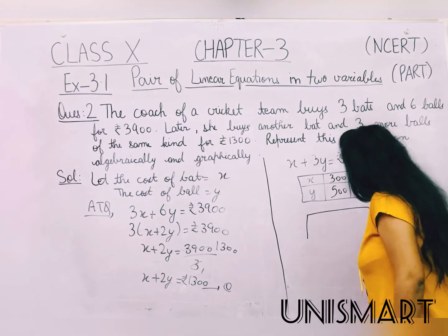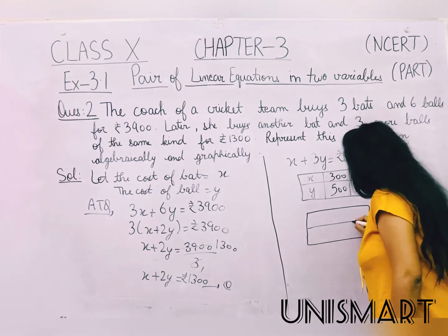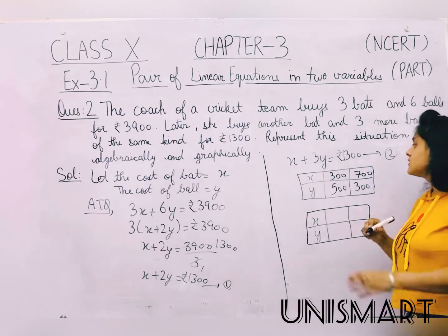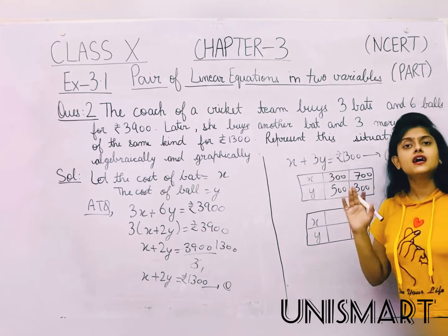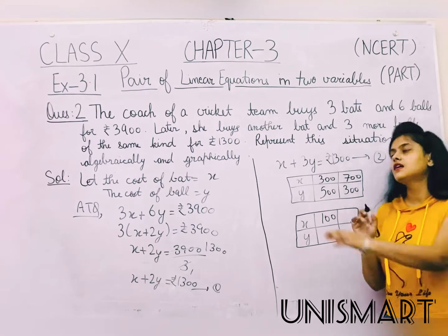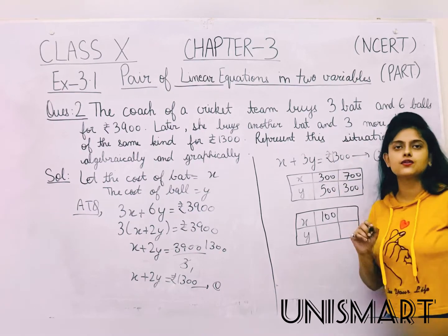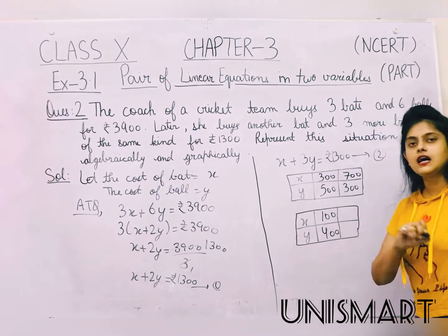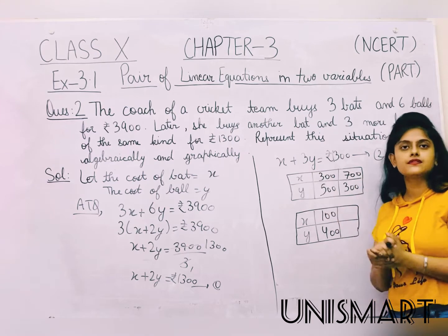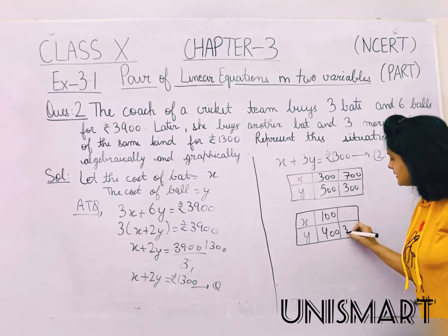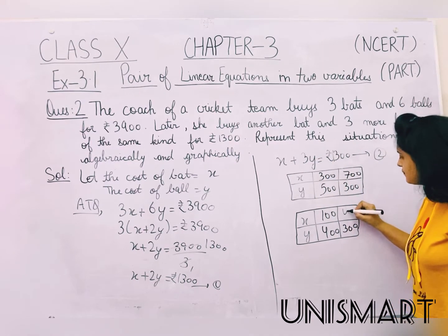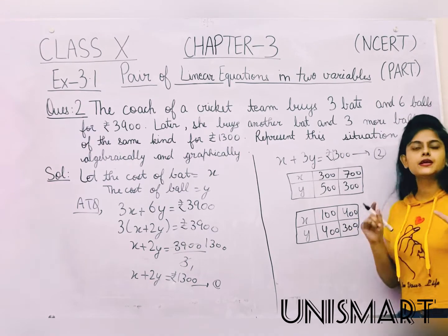Now we will form the table. This is x and y. We put x as 100: 100 will be minus, giving 1200 here, and when we divide it gives 400. If we put y as 300, then 3 into 300 is 900. If we put y as 300, 900 will be minus, so my result is 400. So here are my points: x equals 100, y equals 400, and x equals 400, y equals 300.